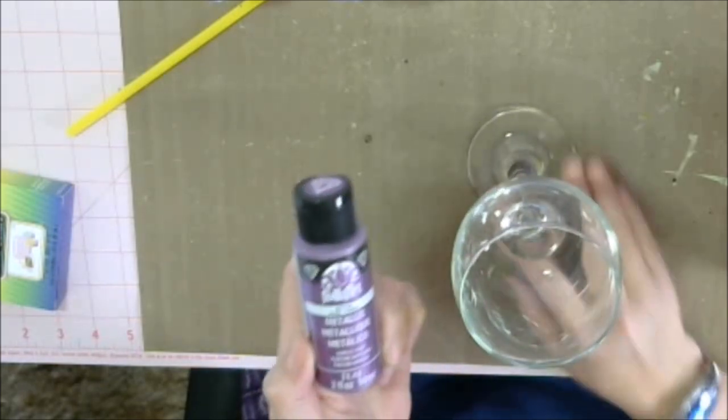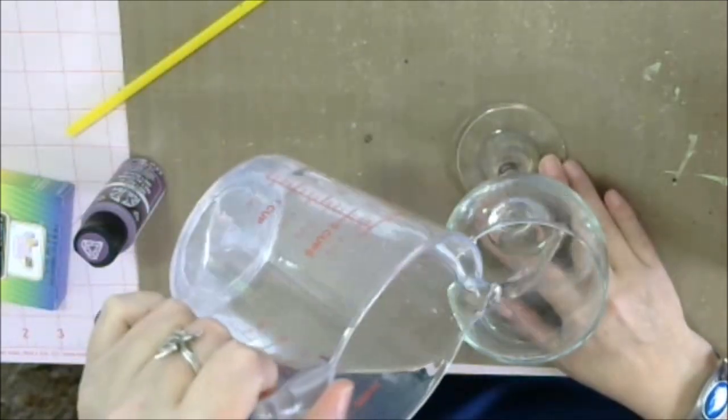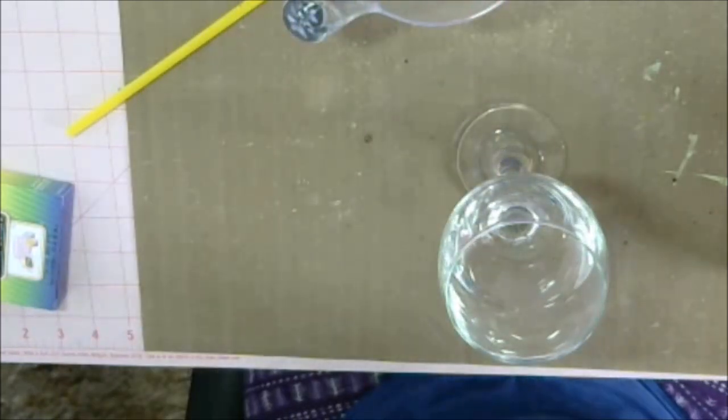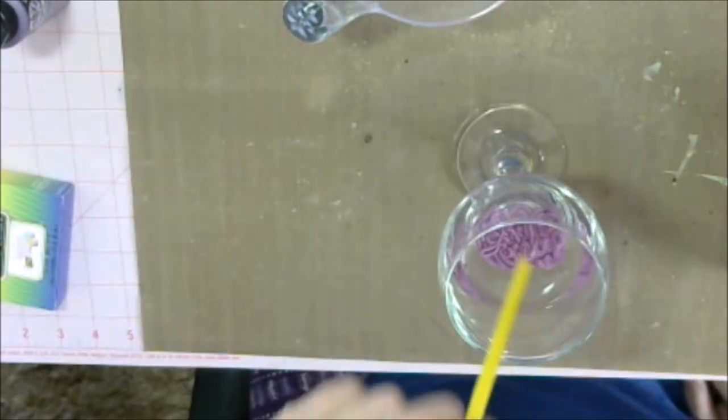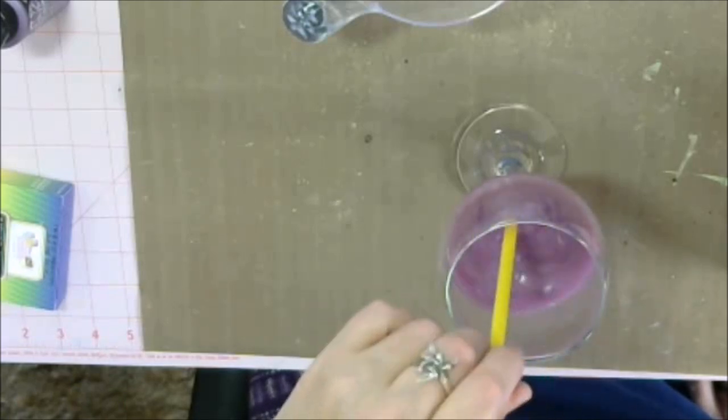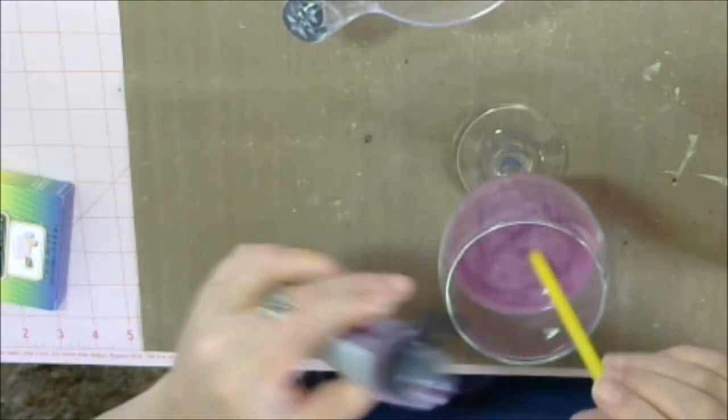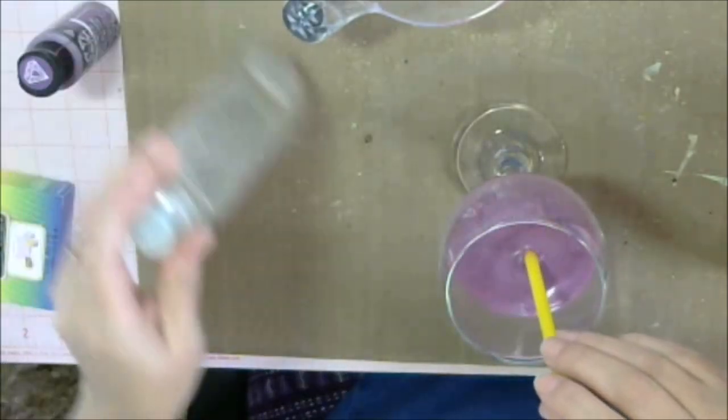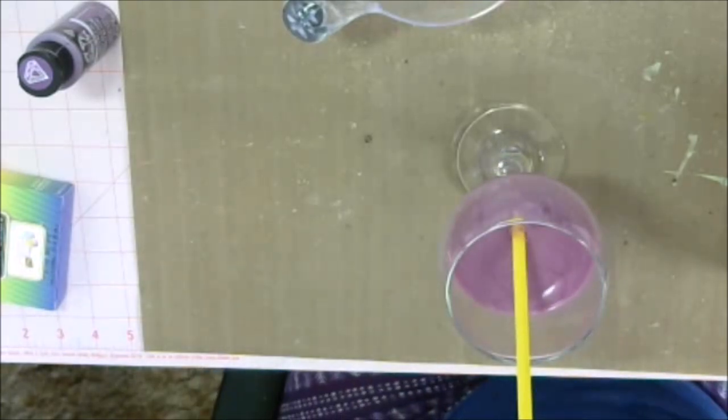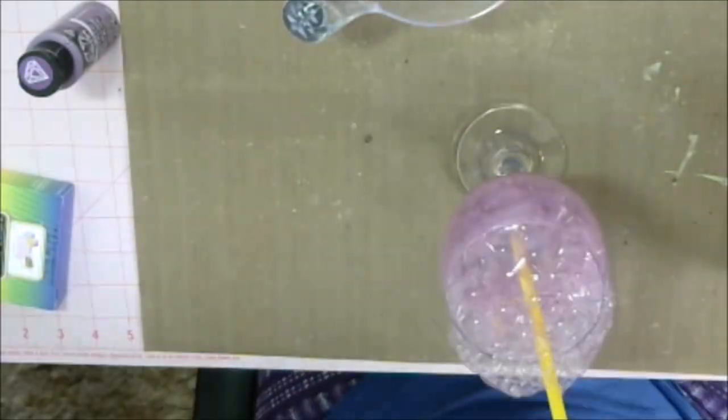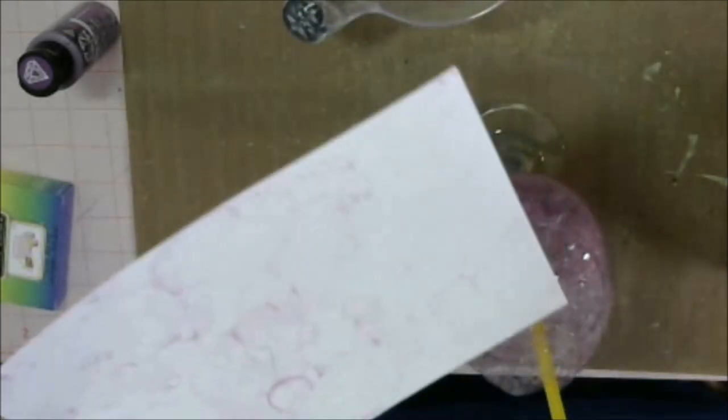Our next experiment is going to be with metallic. And I have this plum folk art metallic paint, so we're going to see how this comes out. Well, the water sure looks pretty. I will give it that. And I don't know how well this picks up. That has a beautiful shimmer to it. I absolutely love the way that turned out. So, metallic paint also works very well on this.